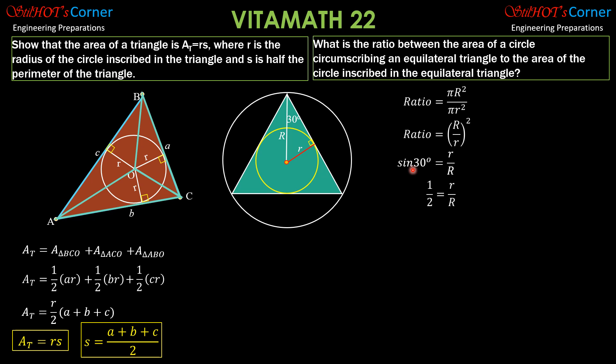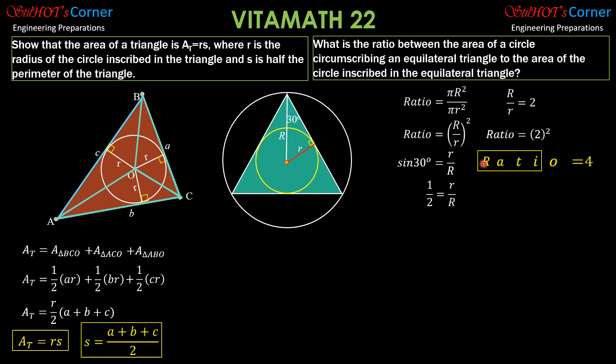Since one half equals small r over big R, then big R over small r equals 2. Therefore the ratio is 2 squared, and the required ratio is 4.